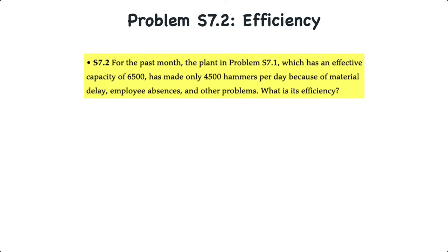For the past month, the plant for which we just calculated the utilization has an effective capacity of 6,500 units but has only made 4,500 per day because of material delay, employee absences, and other problems. So what's the efficiency?